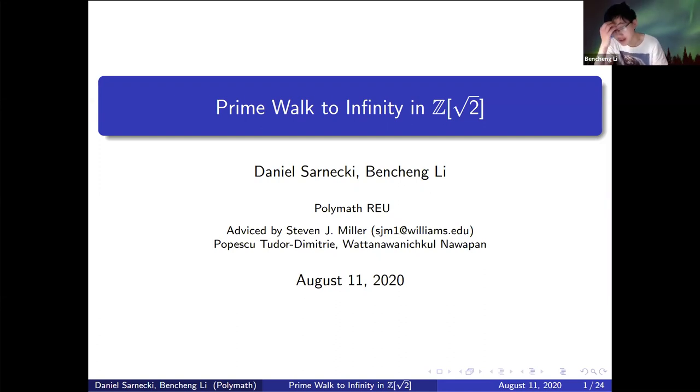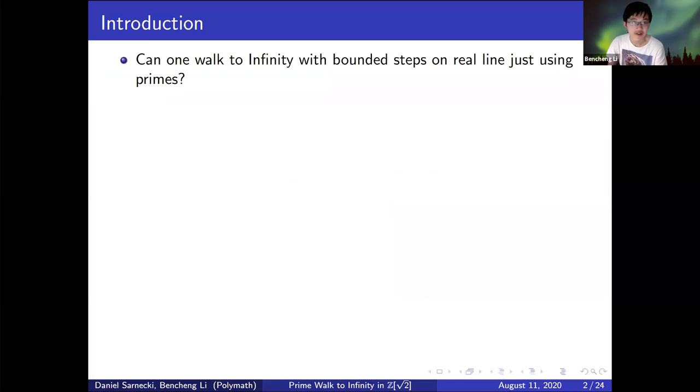We are both undergraduates. I'm an undergraduate at the University of Michigan, and Daniel is a rising junior at Cornell. This project is advised by Professor Steven J. Miller and our TAs Tudor and Noah Penn. So let's begin our introduction. We start with a simple question in this project: Can one walk to infinity with bounded steps on the real line just using primes?